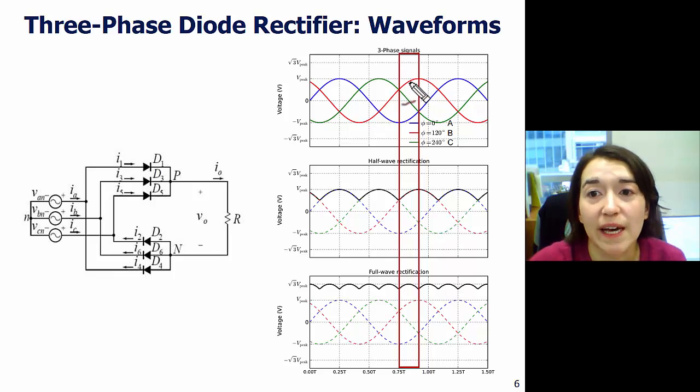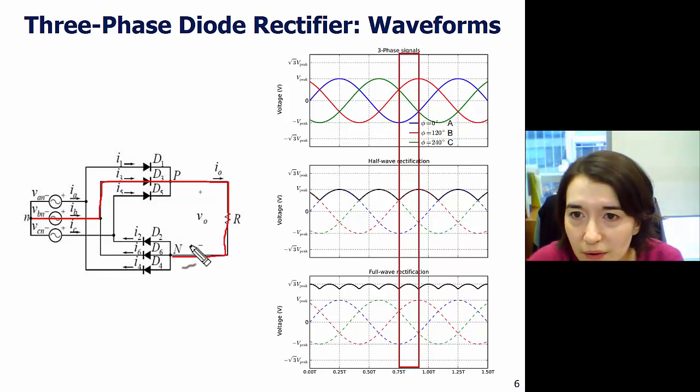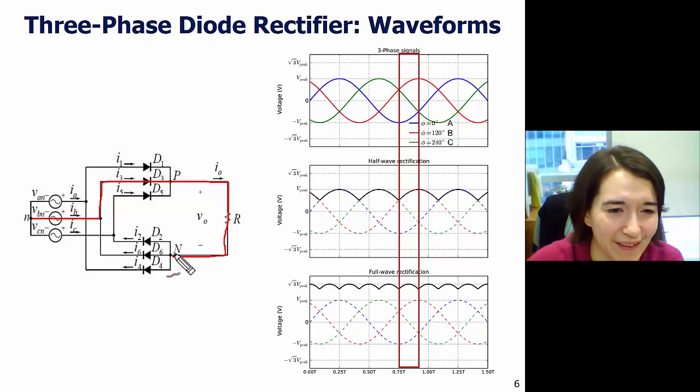Here, we have B as the highest. Now, it's switched, so B is the highest, and then A is the lowest. So, from B, we go through here. We can go through diode three, through our load. Come back, and go through our lowest one here is A. So, we're going to go to A, which is over here.